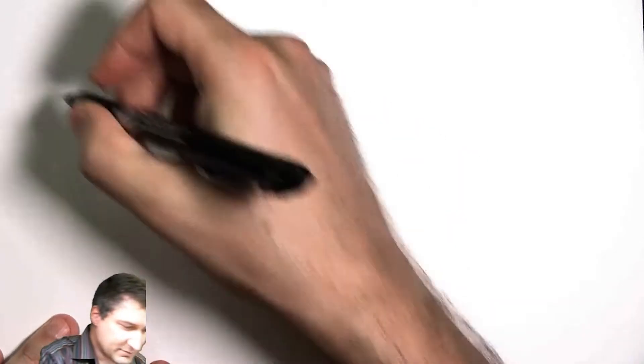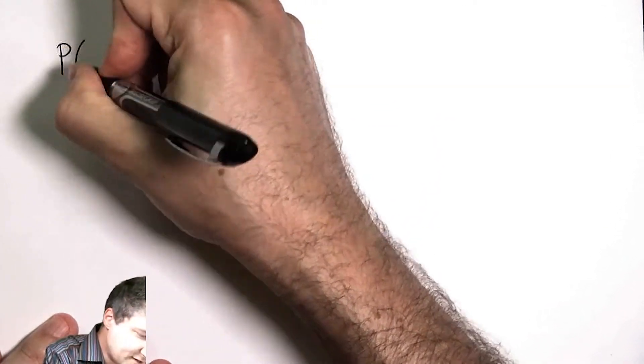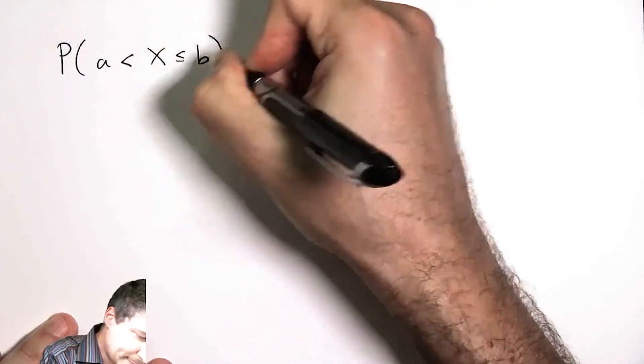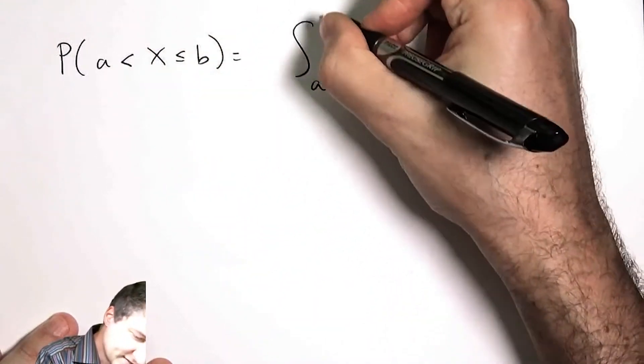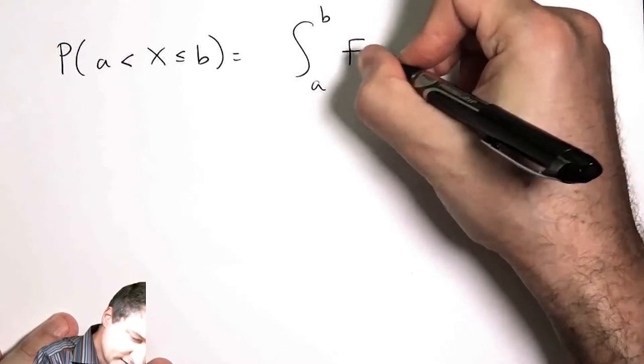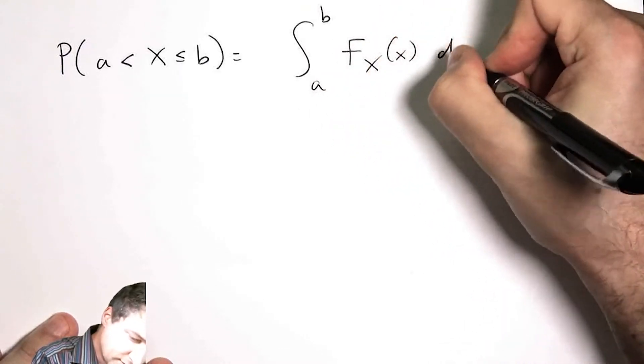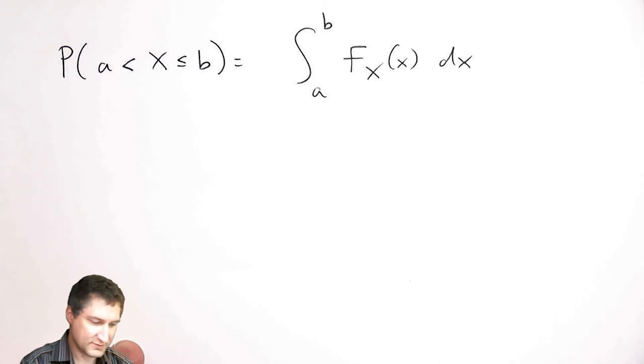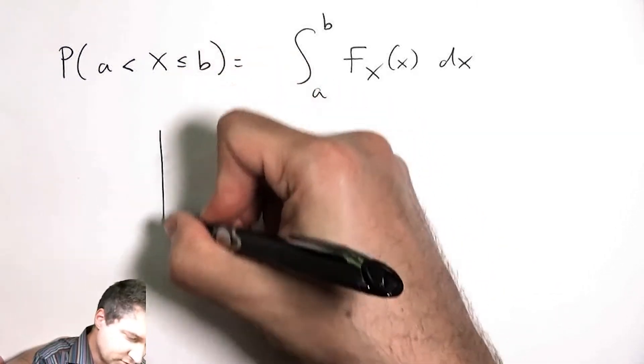How are we going to use the PDF? The PDF is most commonly used to figure out probabilities of this type. I basically integrate the PDF over the interval I care about to find out what's the probability of being inside that interval.